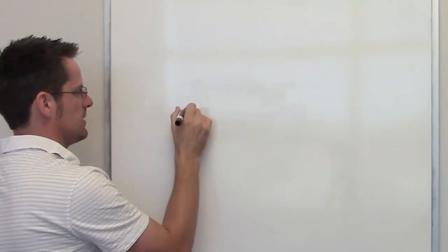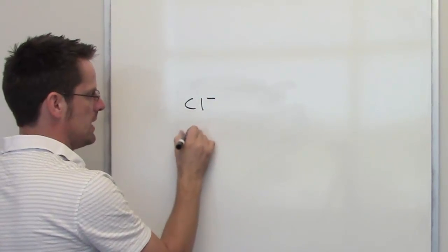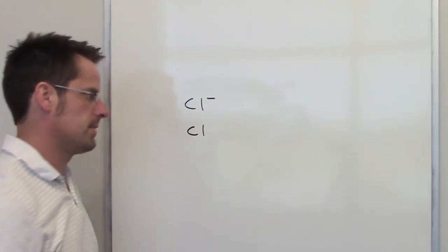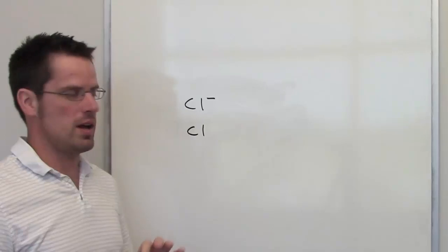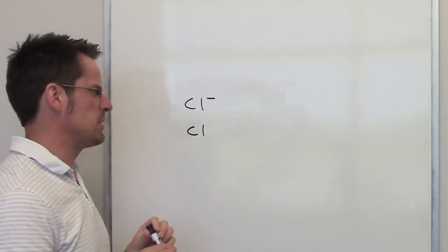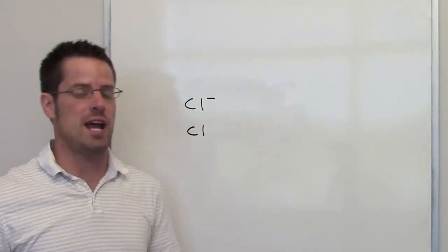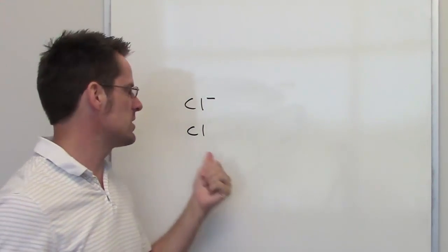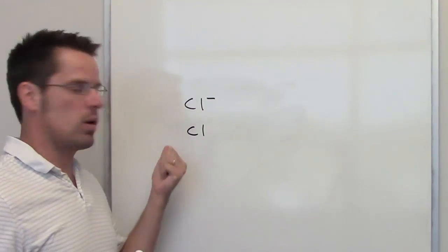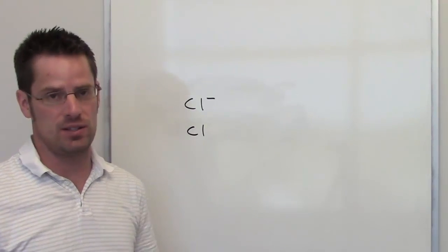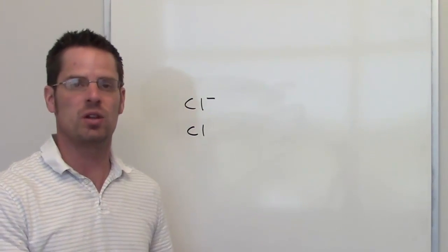In the second question, we're asked to compare chloride with chlorine. As far as size is concerned, there's very little difference between these two. Chloride with a negative charge has the same number of orbitals as neutral chlorine. Furthermore, these chlorines have the same number of protons in their nuclei, of course, because they're both chlorine atoms.